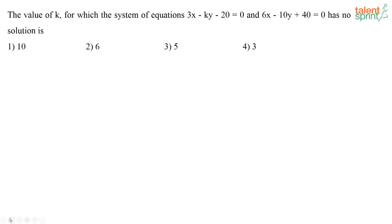The value of K for which the system of equations 3x minus ky minus 20 equals 0 and 6x minus 10y plus 40 equals 0 has no solution is? 3x minus ky minus 20 equals 0 and 6x minus 10y plus 40 equals 0.